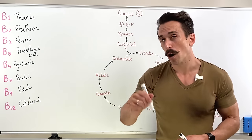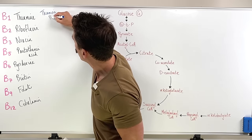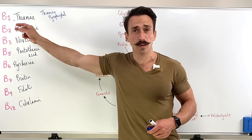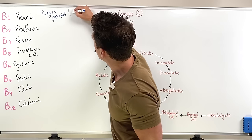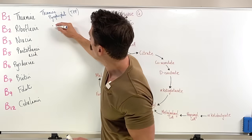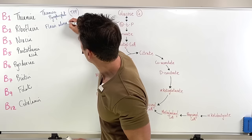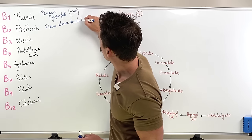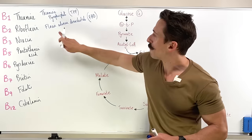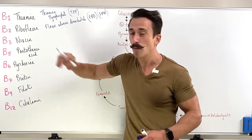Thiamine works as thiamine pyrophosphate — also written as TPP. So if you want to know more about how B1 works within the body, google 'thiamine pyrophosphate.' Riboflavin produces the flavonoids, which include flavin adenine dinucleotide, often written as FAD. It can also produce flavin mononucleotide, known as FMN. So those are the riboflavin active forms.